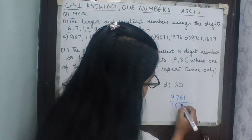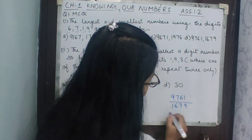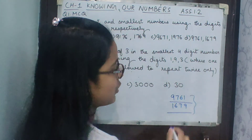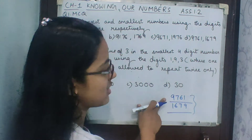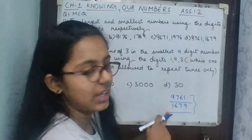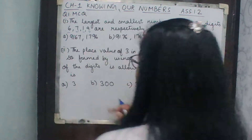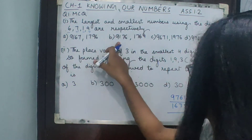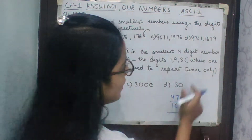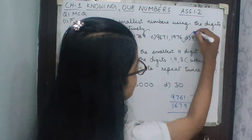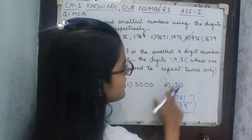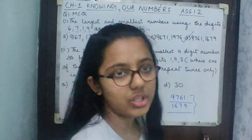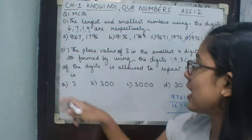For the smallest number, we start with the smallest digit: 1, then 6, then 7, then 9 — so our smallest number is 1679. Checking the options: the last option is correct — 9761 and 1679.